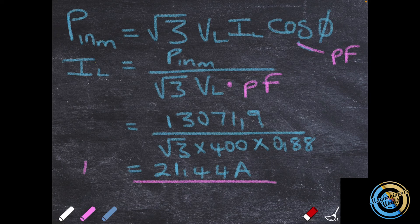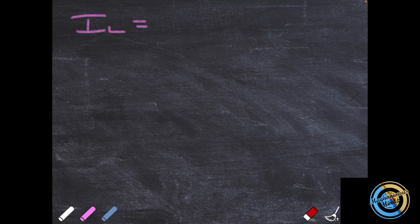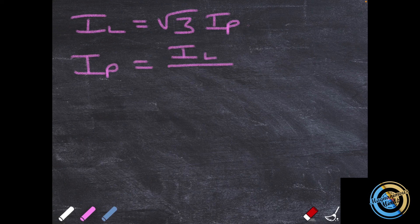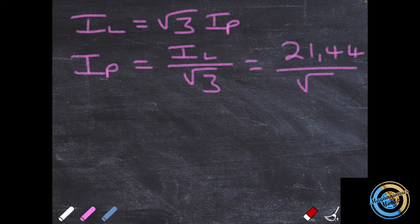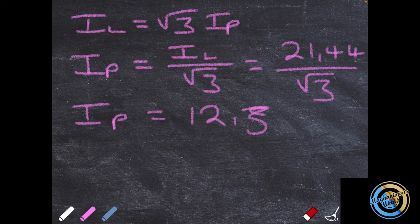This is our line current. To get the phase current, we know that for a delta connection I_line = √3 × I_phase, so I_phase = I_L / √3 = 21.44 / √3, which gives us a phase current of 12.38 amps.